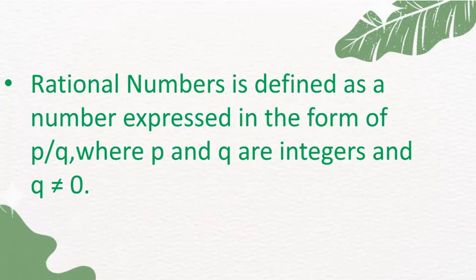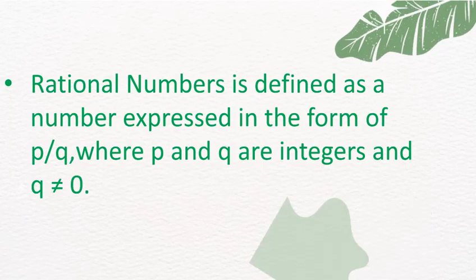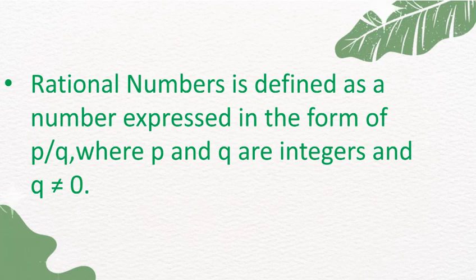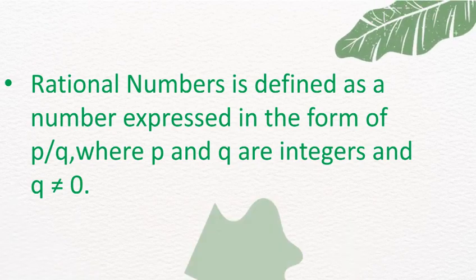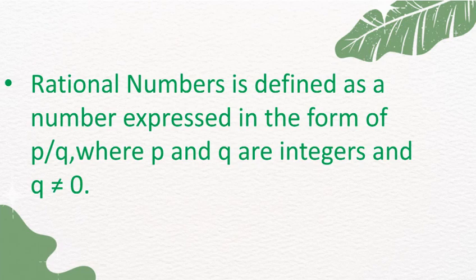Definition of a Rational Number: A Rational Number is defined as a number expressed in the form of P by Q, where P and Q are integers and Q is not equal to 0.